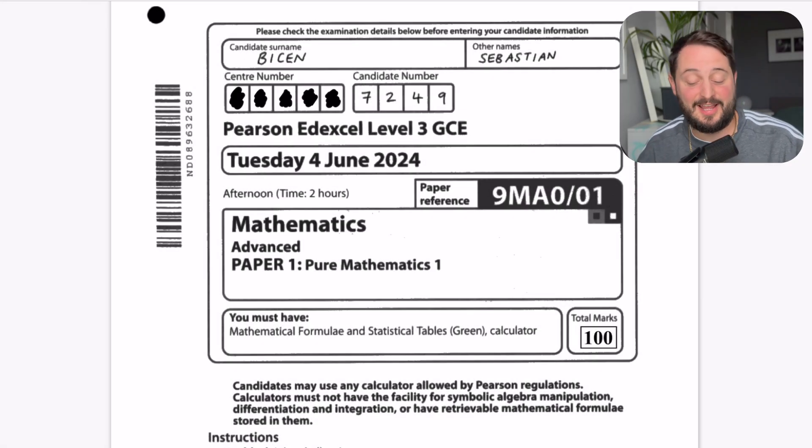Hey guys, it's Mr Bison here, and as you probably know, I took all of the maths A-level exams alongside students in the summer of 2024, and I was very pleased with my mark. I got 299 out of 300, so I want to very quickly in this video prove it to you and show you where I lost that mark.